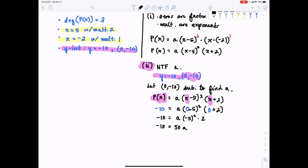And if I divide each side by 50, I would easily be able to solve for a. And therefore, a would be equal to negative 1 fifth.